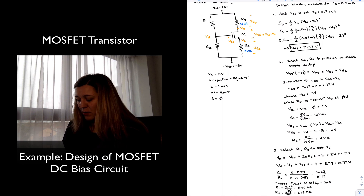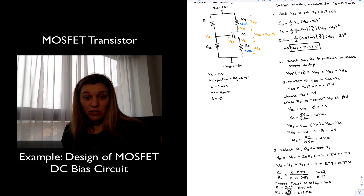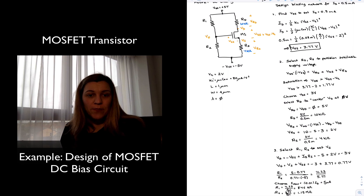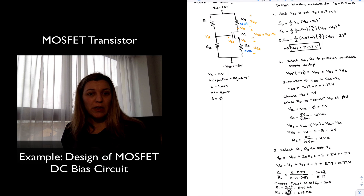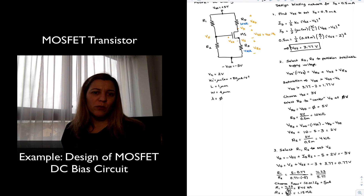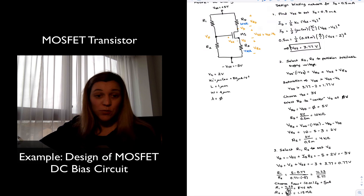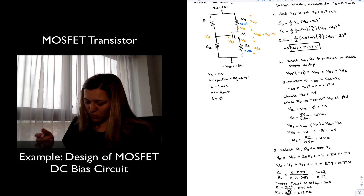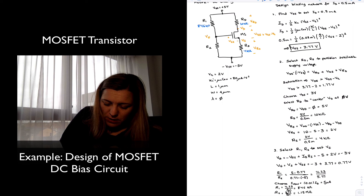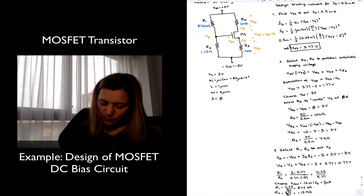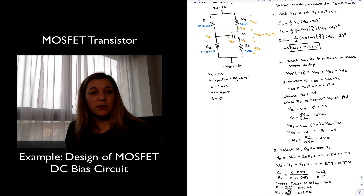There was nothing in the problem statement requiring exactly that divider current, so slightly smaller or larger resistors would also work. In practice, you typically don't want to go past tens of mega ohms or below hundreds of ohms. So we have R1 as 846 kilo ohms and R2 as 1.15 mega ohms, and with that we have finished designing the DC biasing network for our MOSFET transistor.